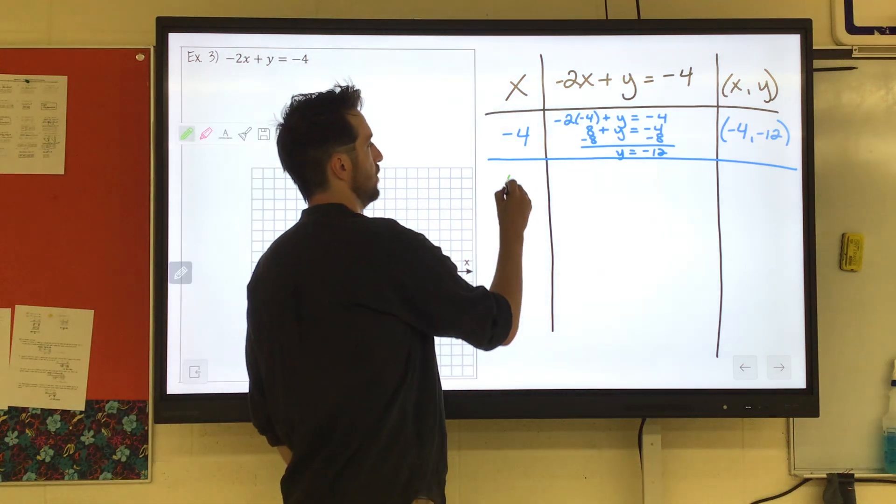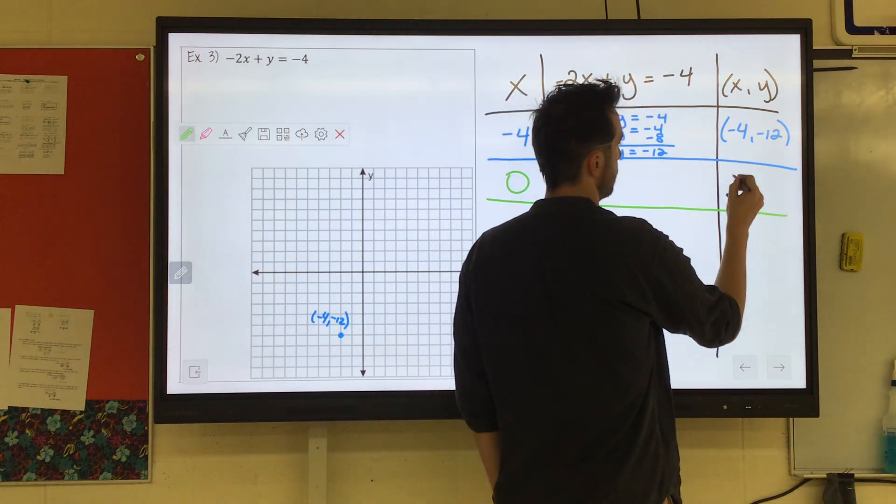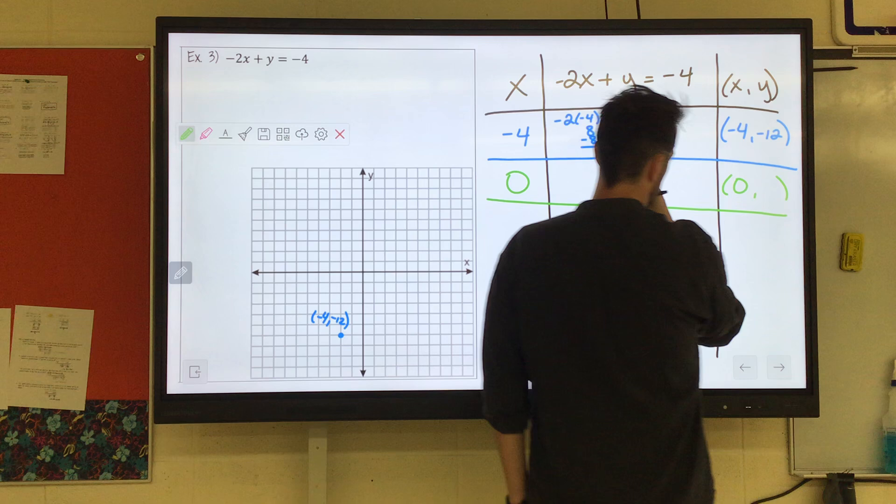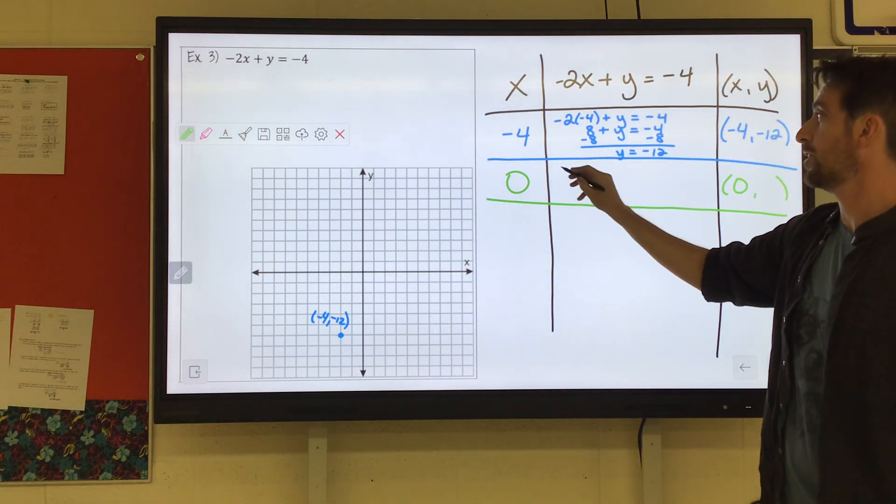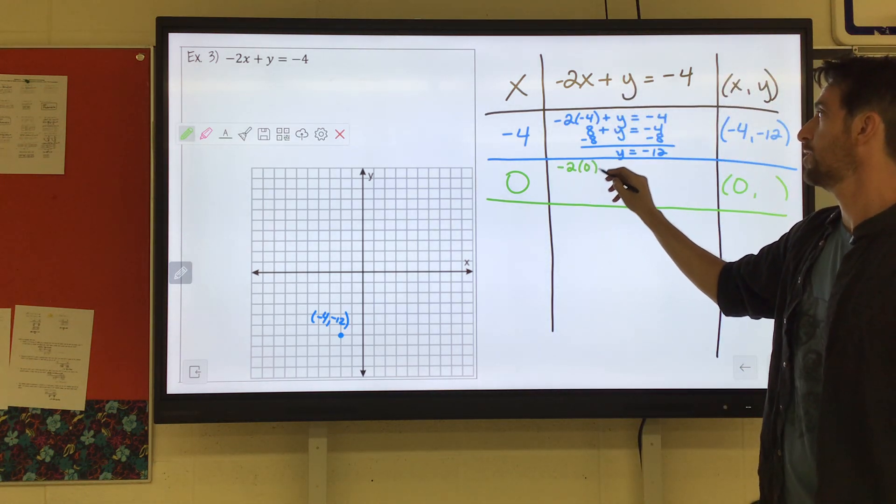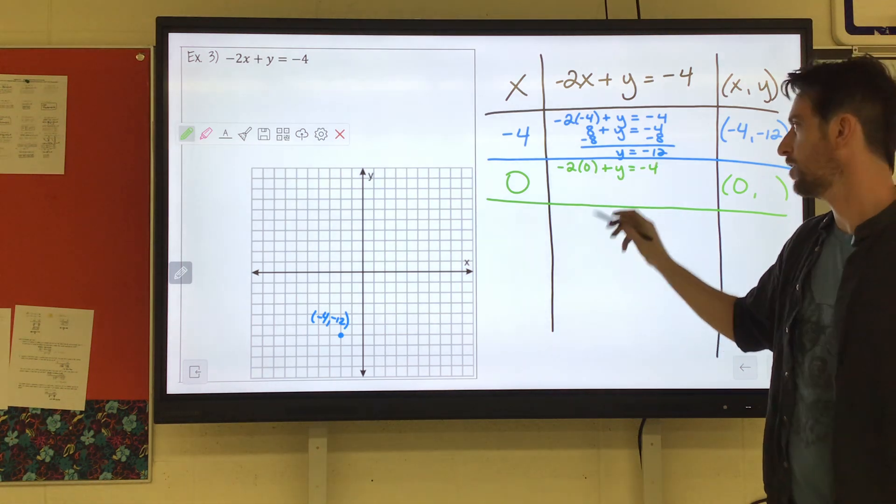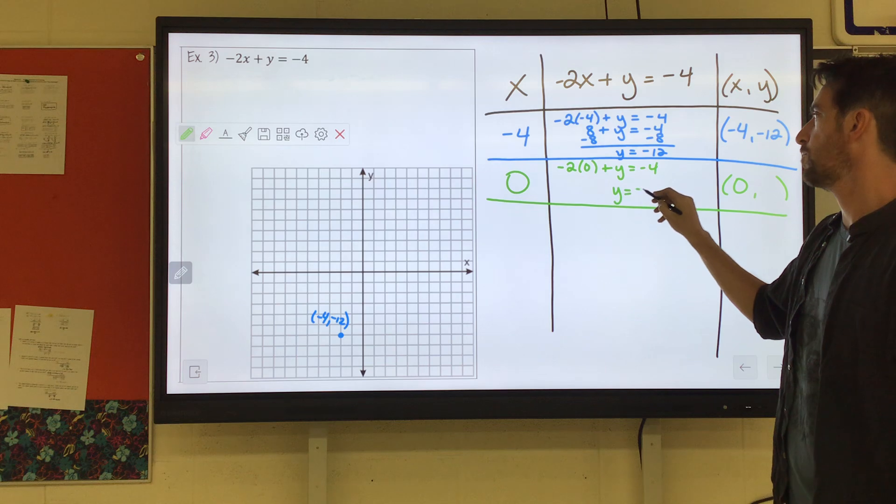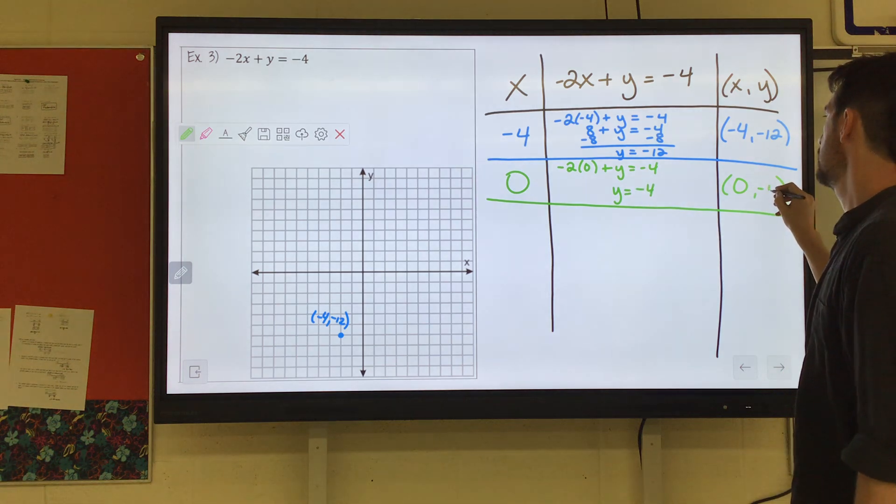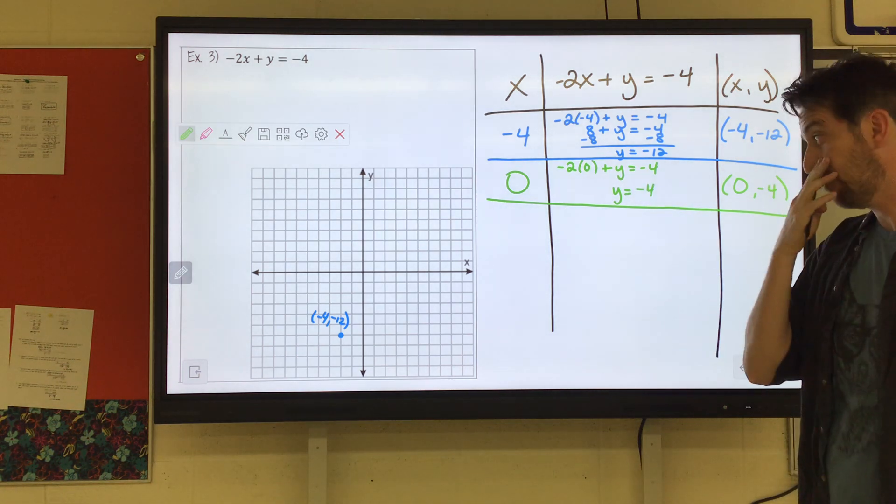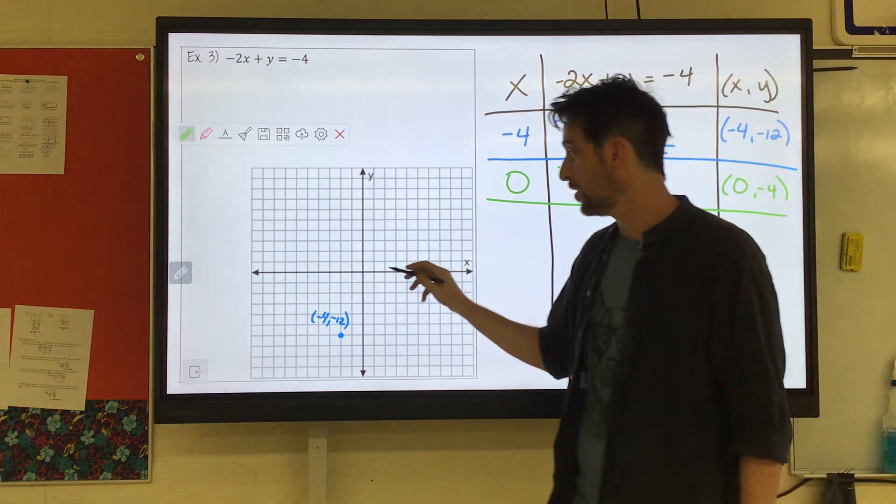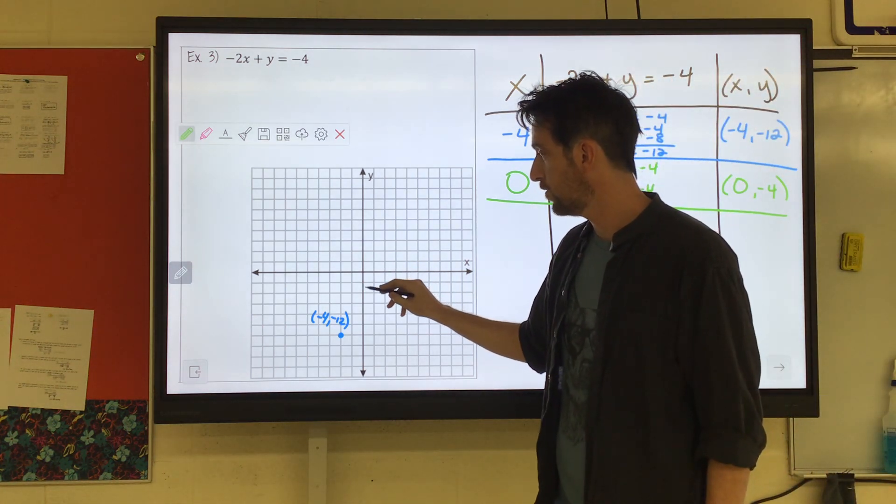Now I'm going to try 0 because 0 is pretty easy to work with. I'm putting this in for x. Negative 2 times 0 plus y equals negative 4. Negative 2 times 0 is 0. It's just going to go away. So we're just left with y equals negative 4. So we'll have a point at 0, negative 4. Again, we're going by 2s here. So 0, negative 2, negative 4.